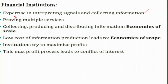Banks collect information, produce it, and distribute some of it as well. Similarly, rating agencies collect lots of information about the financial market and different firms and stakeholders, and then distribute this information. Because of that, when they collect, produce and distribute information, sometimes they have economies of scale. The volume of their activity provides them incentive to engage in further different types of financial activities.